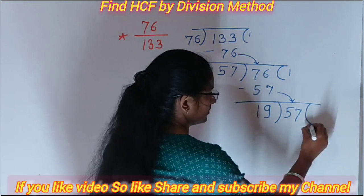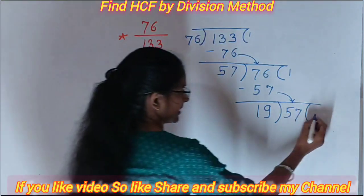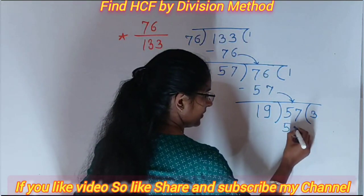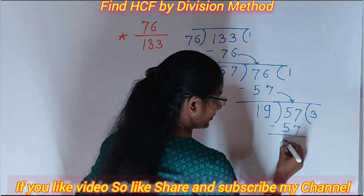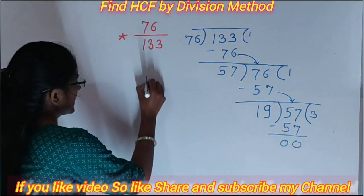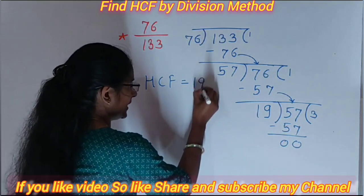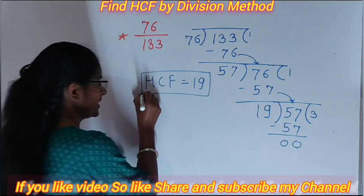57. Now second, 19 table. 19 threes are 57. When we subtract we get zero. Now here we finish, means our HCF is 19.